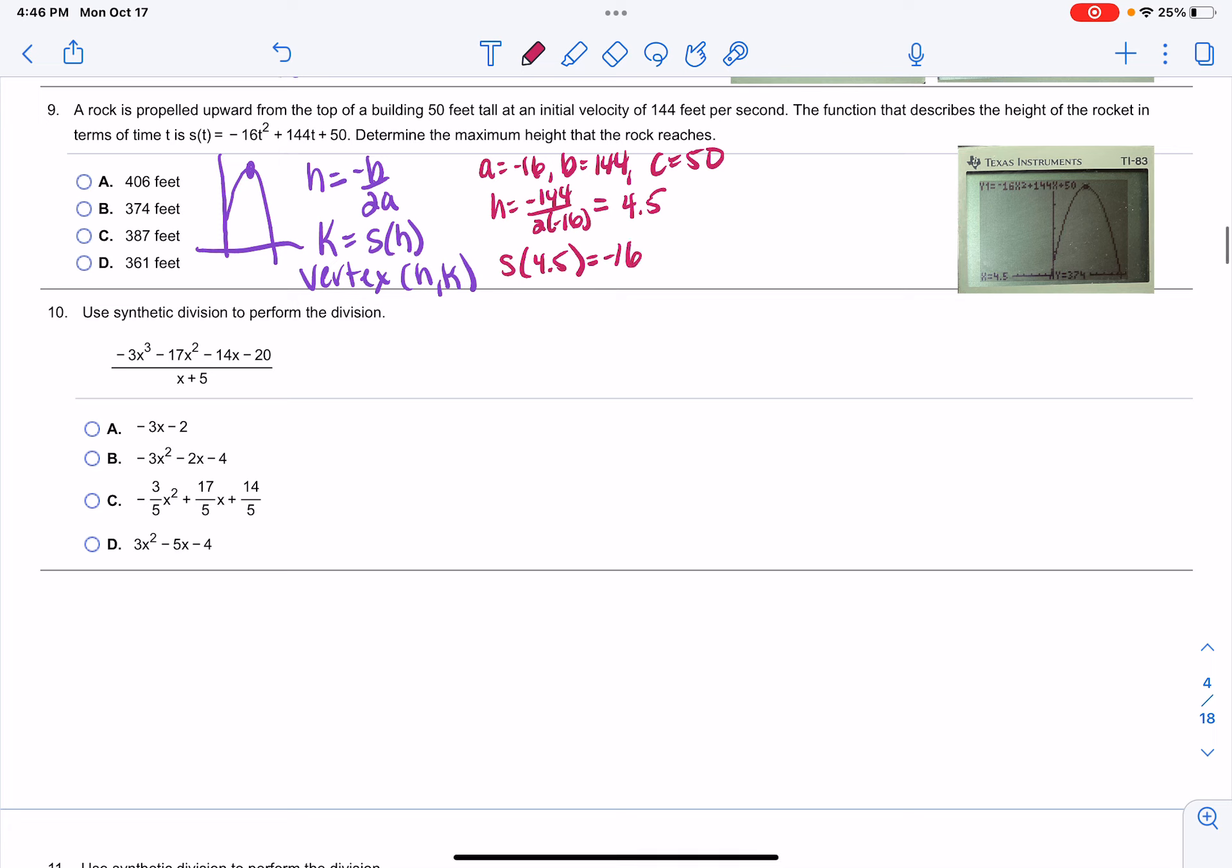with the time 4.5. So we get negative 16 times 4.5 squared plus 144 times 4.5 plus 50. When you simplify that, you get 374.